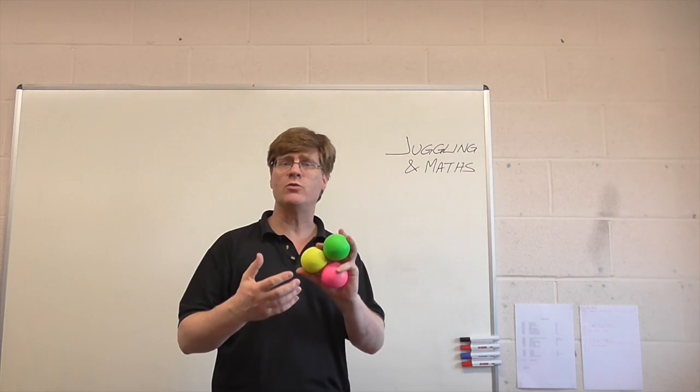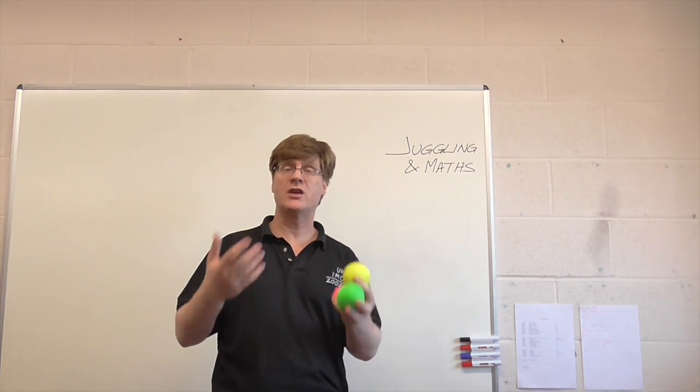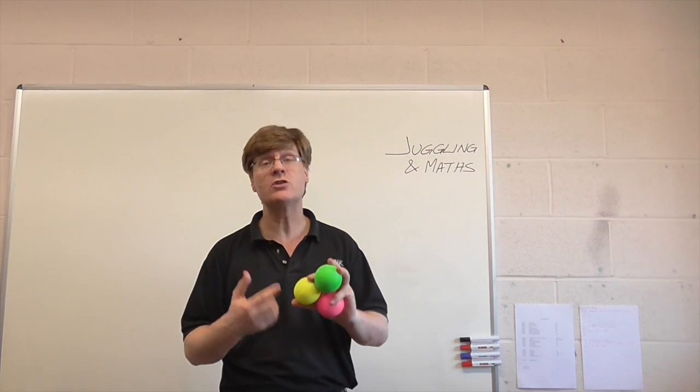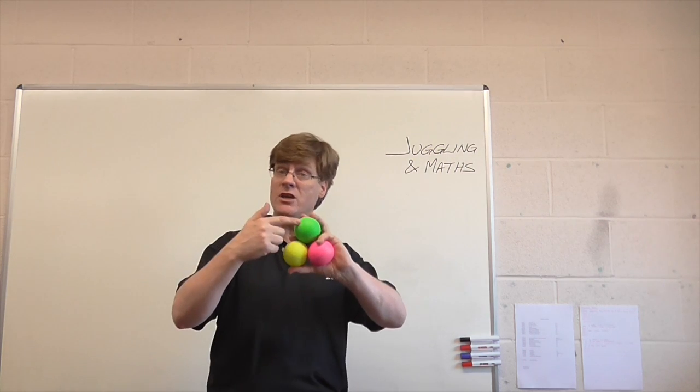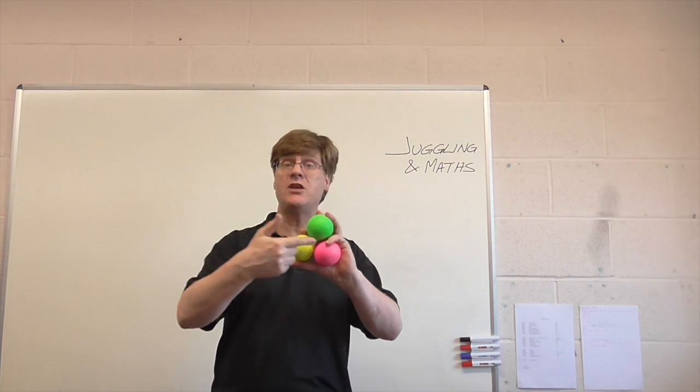And that's a key point with juggling three in this so-called standard pattern, the cascade. All the throws are the same. Now if all the throws are the same, we'll throw the green, then the pink, then the yellow, then the green, then the pink, then the yellow.